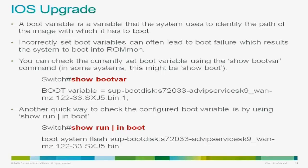I've given a sample output of the command here. For the 6500 we were testing, the boot variable has been set to 12.2.33SXJ5. Another way to check your boot variable is to do a show run pipe include boot — this gives you the actual command out of the running config showing what you configured on the box so the device can boot up using that specific IOS image.